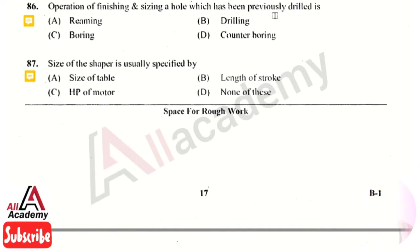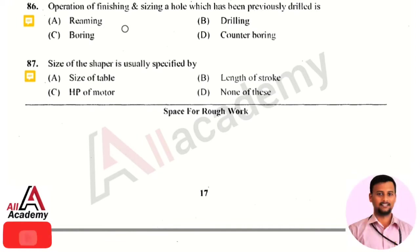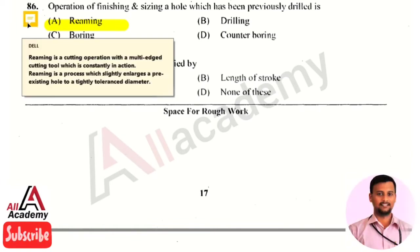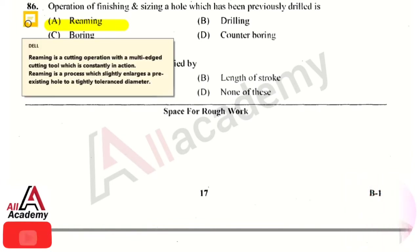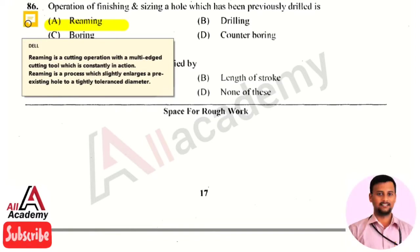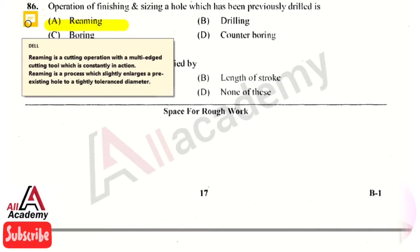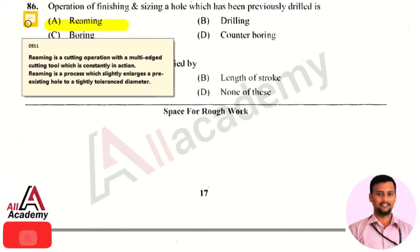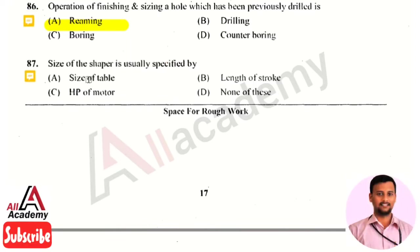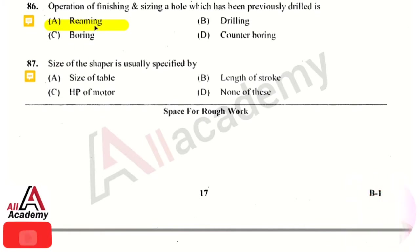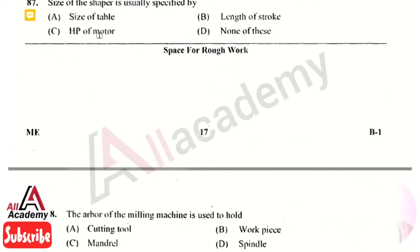The right answer is option 1, that is reaming. Reaming is a cutting operation using a multi-edged cutting tool which is constantly in action. The tool used for the reaming process is called a reaming tool, which slightly enlarges a pre-existing or previously drilled hole to a tightly toleranced diameter. Reaming is used for finishing and sizing holes that were previously drilled.